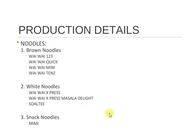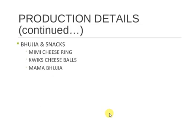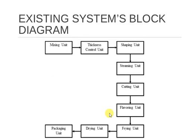Products in detail: noodles — Magic and food types including brown noodles, white noodles, snack noodles, Quick, Mini, and Express varieties. Existing system block diagram consists of: mixing unit, thickness control unit, shaping unit, steaming unit, cutting unit, flavoring unit, frying unit, drying unit, and packaging unit.